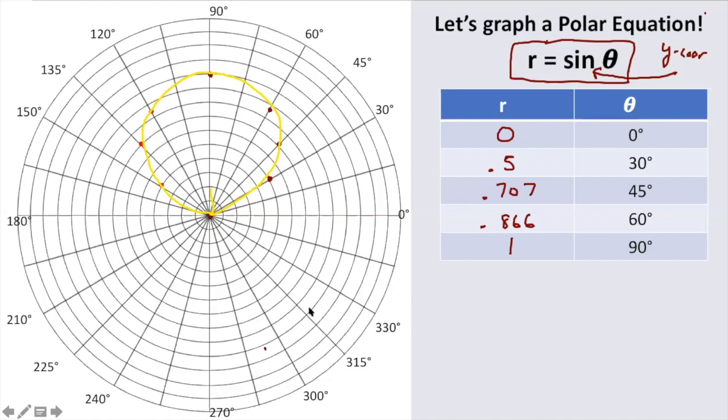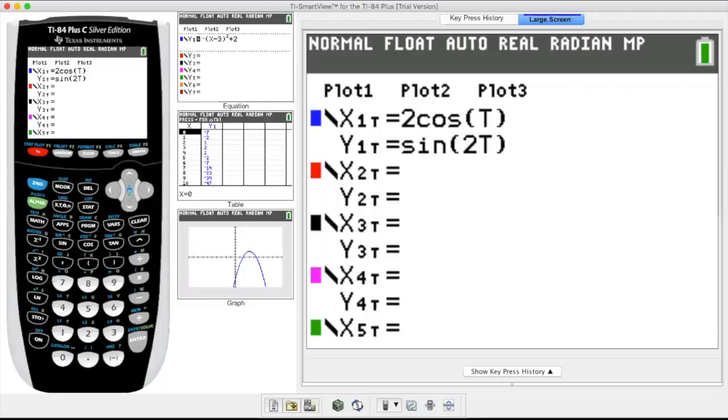So that's an example of plotting points using an equation in polar form. So next, we're going to transition into how to use the graphing calculator to do this, and we will wrap up this video.